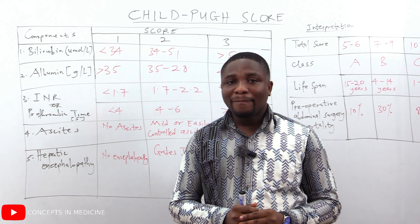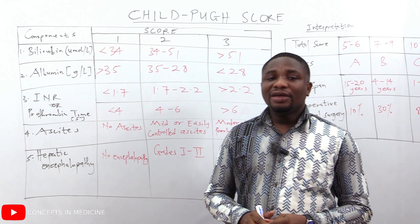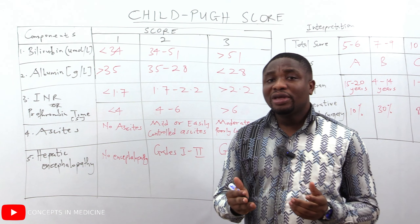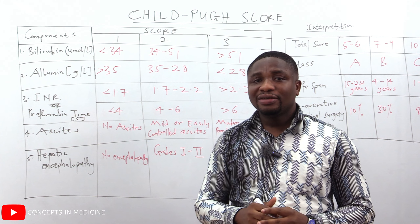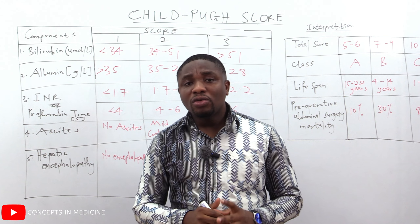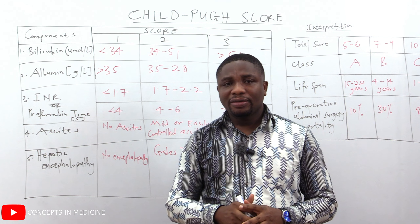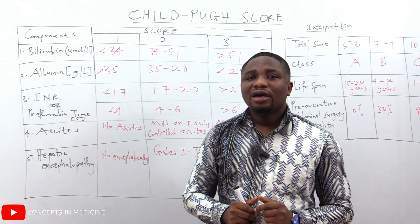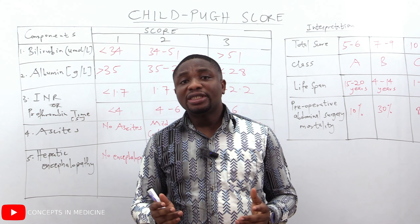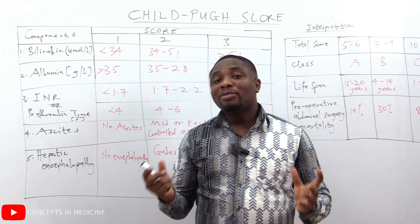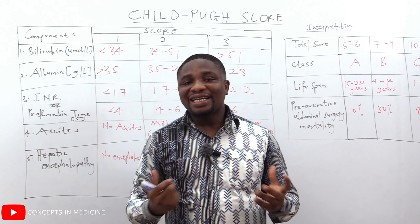Welcome to Concept in Medicine. Today we are going to be looking at the Child-Pugh Score. The Child-Pugh Score is a clinical scoring system used to determine the severity, the prognosis, and the perioperative mortality of abdominal surgeries in a chronic liver disease or liver cirrhosis patient.